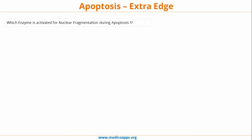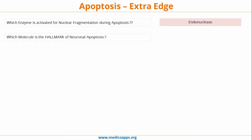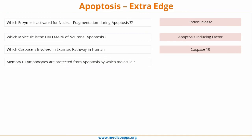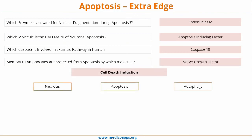Some extra edge questions: Which enzyme is activated for nuclear fragmentation in apoptosis? The answer is endonuclease. Which molecule is the hallmark of neuronal apoptosis? The answer is apoptosis-inducing factor (AIF). Which caspase is involved in the extrinsic pathway in humans? The answer is caspase 10. Memory B lymphocytes are protected from apoptosis by which molecule? The answer is nerve growth factor.